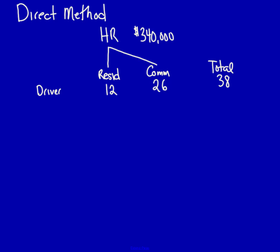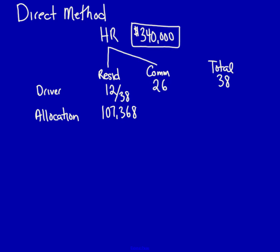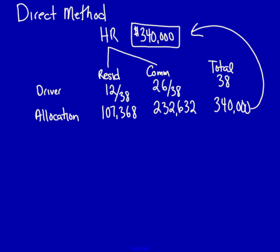To divide the $340,000, I use the driver as the base. For residential: 12 ÷ 38 × $340,000 = $107,368. For commercial: 26 ÷ 38 × $340,000 = $232,632. I add these together to verify they equal $340,000 — and they do, confirming the calculations are correct.